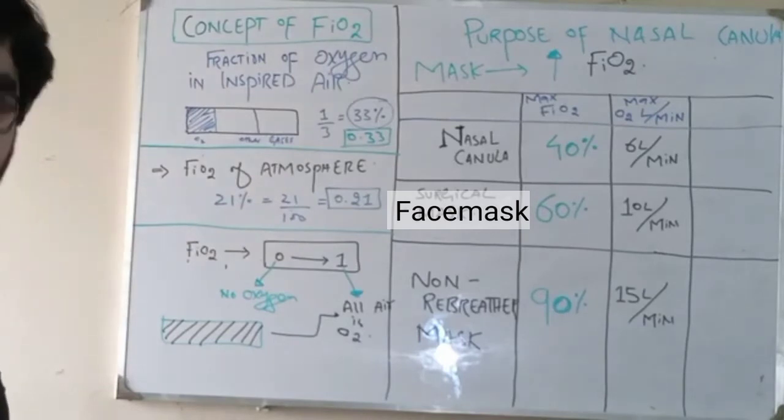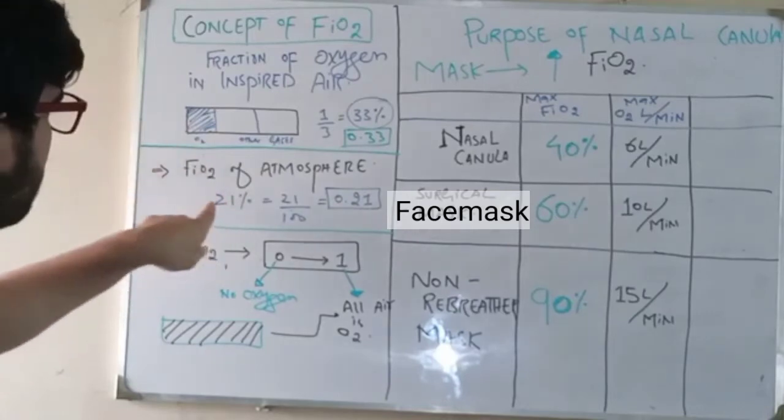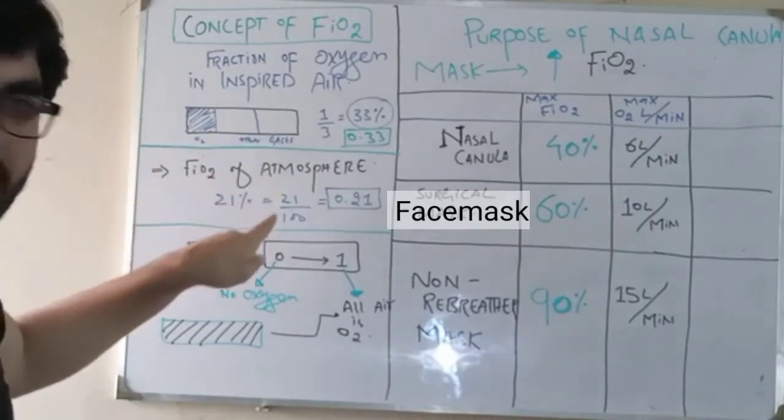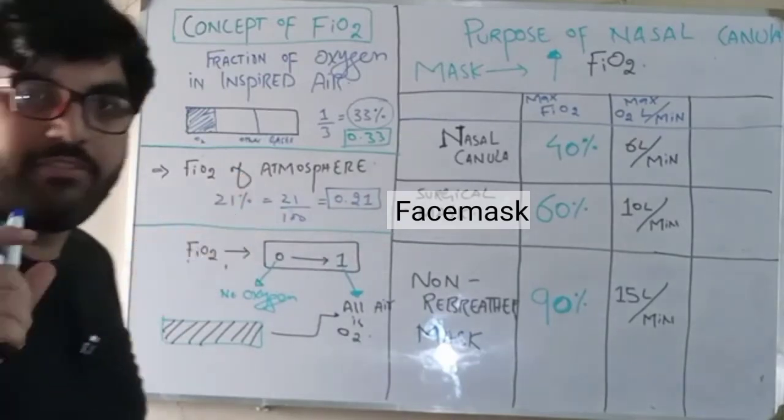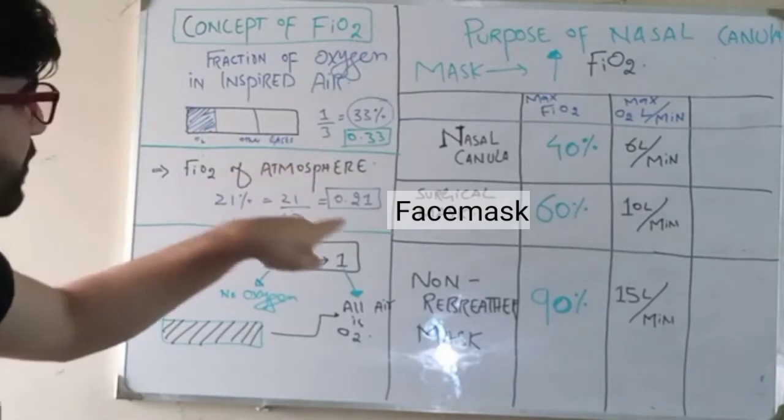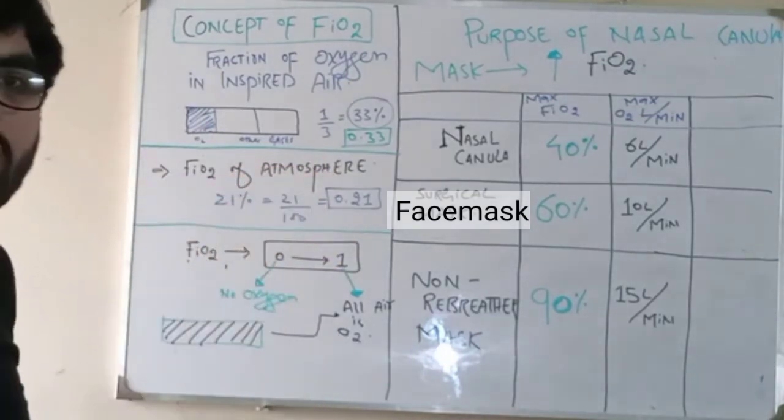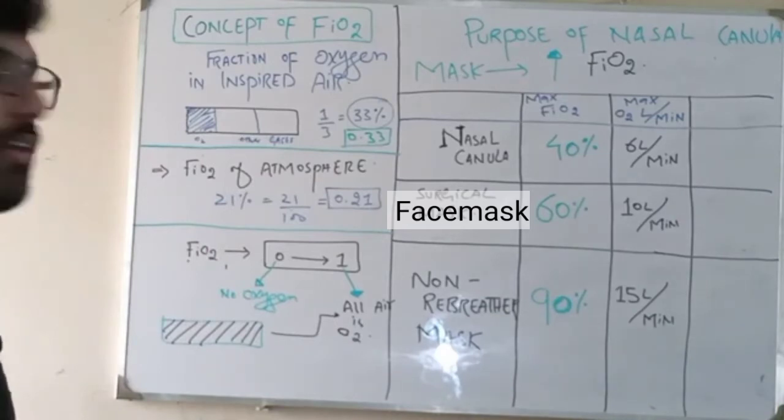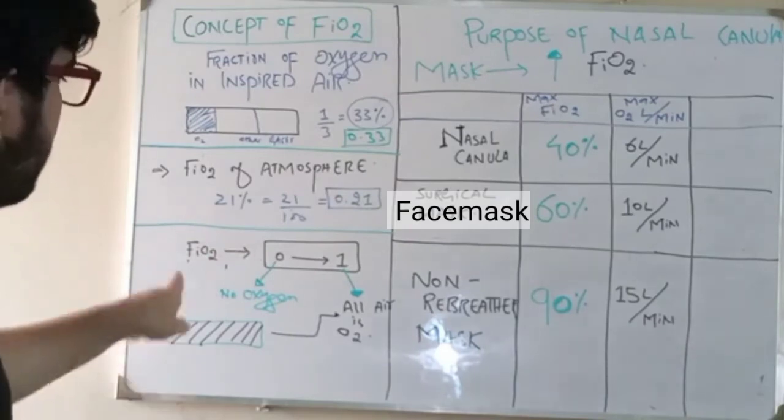Now the FiO2 of atmospheric air - we know that in atmosphere the oxygen percentage is 21 percent, so 21 by 100, so 0.21. The FiO2 of atmosphere is the fraction of oxygen in the present or in the given amount of atmospheric air. The values of FiO2 range from zero to one.